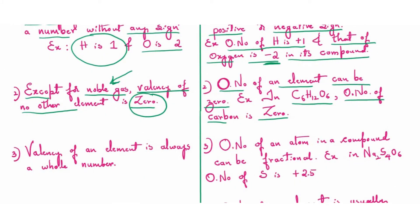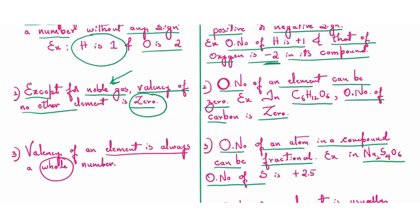The third difference is that valency of an element is always a whole number — this concept we have to remember. But whereas the oxidation number of an atom in a compound can be fractional. For example, in sodium tetrathionate compound, the oxidation number of sulfur is plus 2.5, which is a fraction.